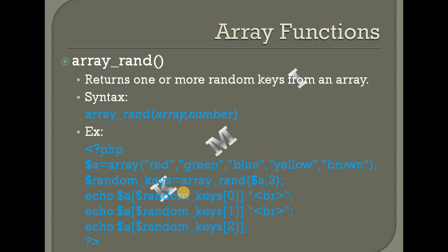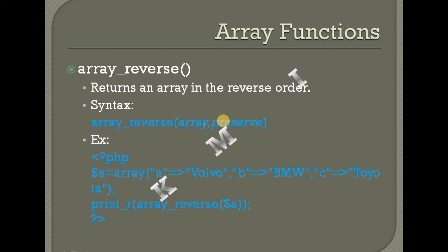Array_rand — returns one or more random keys from an array. Then array_reverse — returns an array in reverse order.